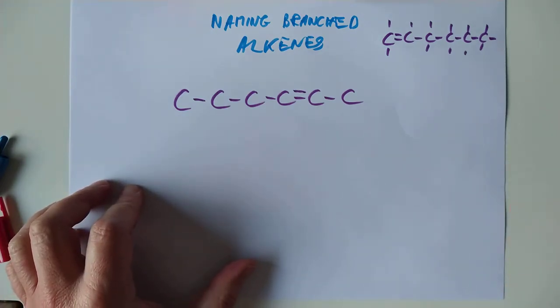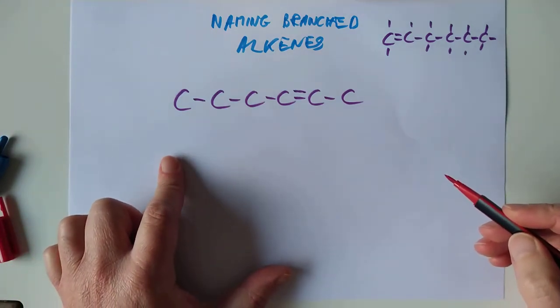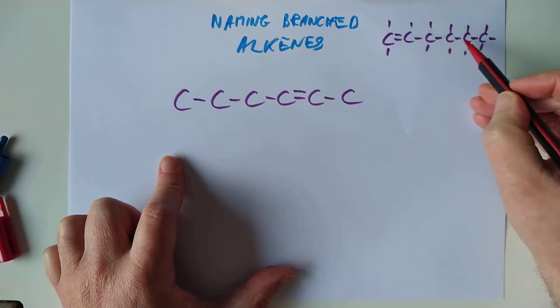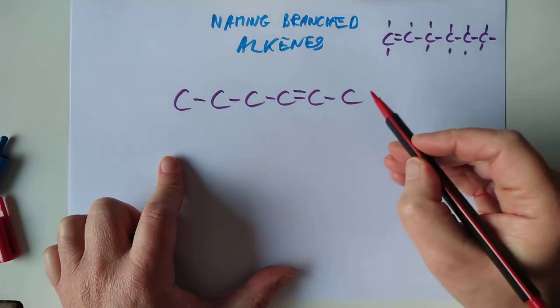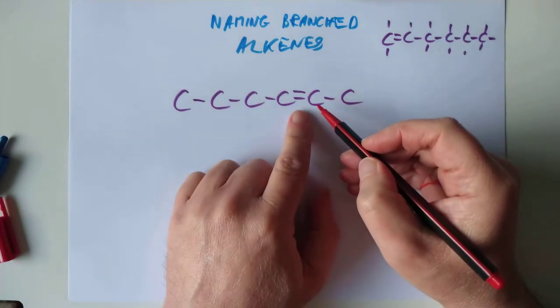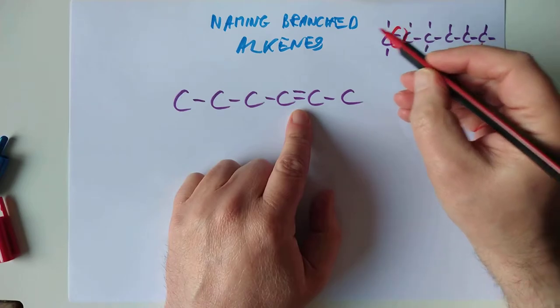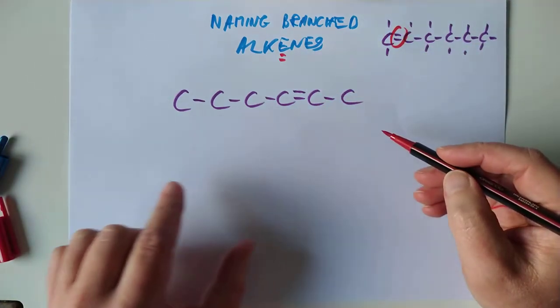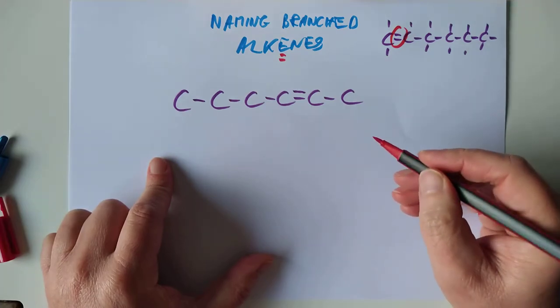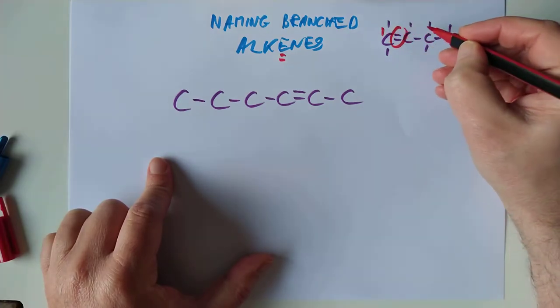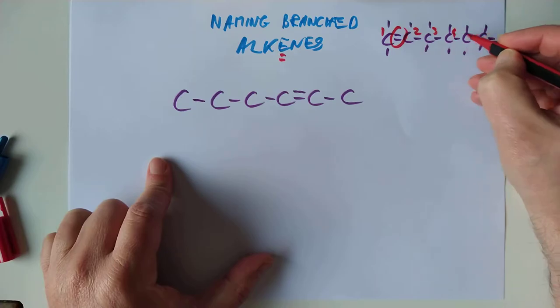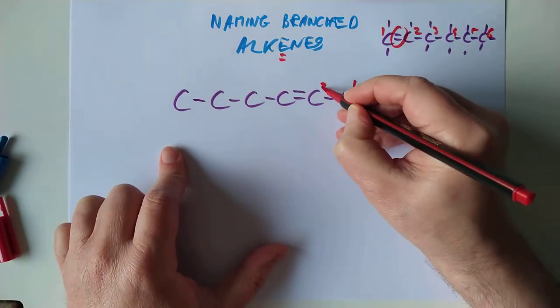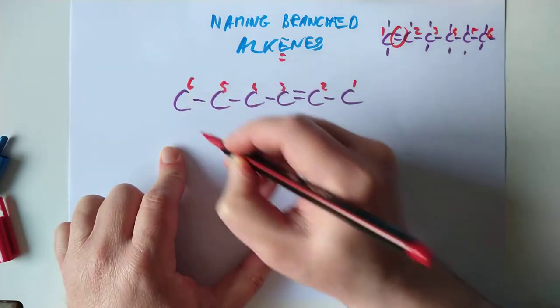So I think what we should do is take a leaf out of the book of branched alkanes. And I think we should number the carbons in the skeleton here, starting with whichever end is closest to the double bond. Because the double bond is crucial to the alkenes. A double bond is the daddy, basically. So we need to number whichever end is closest. So this would be carbon 1, 2, 3, 4, 5, 6. And in this molecule here, 1, 2, 3, 4, 5, 6.